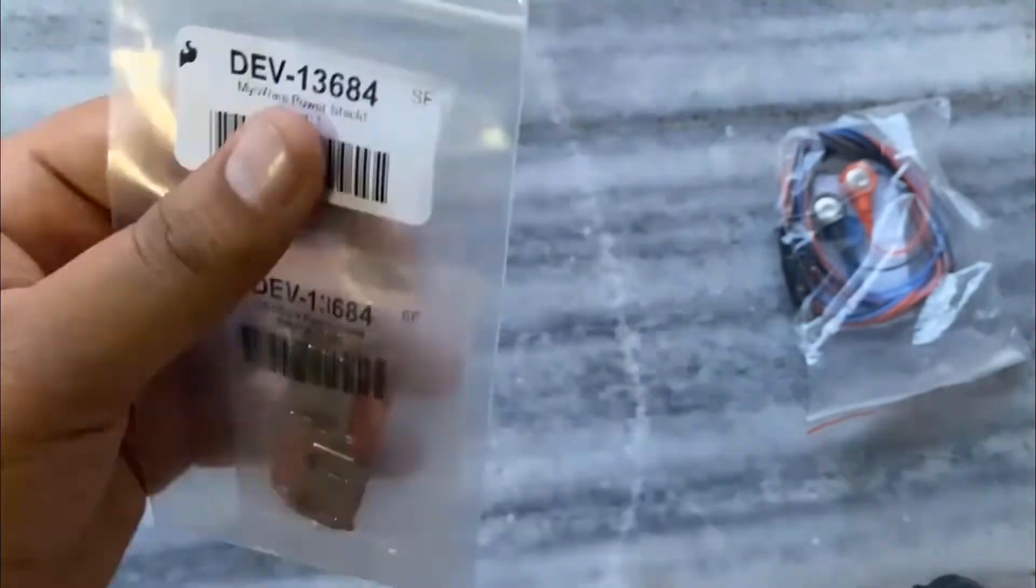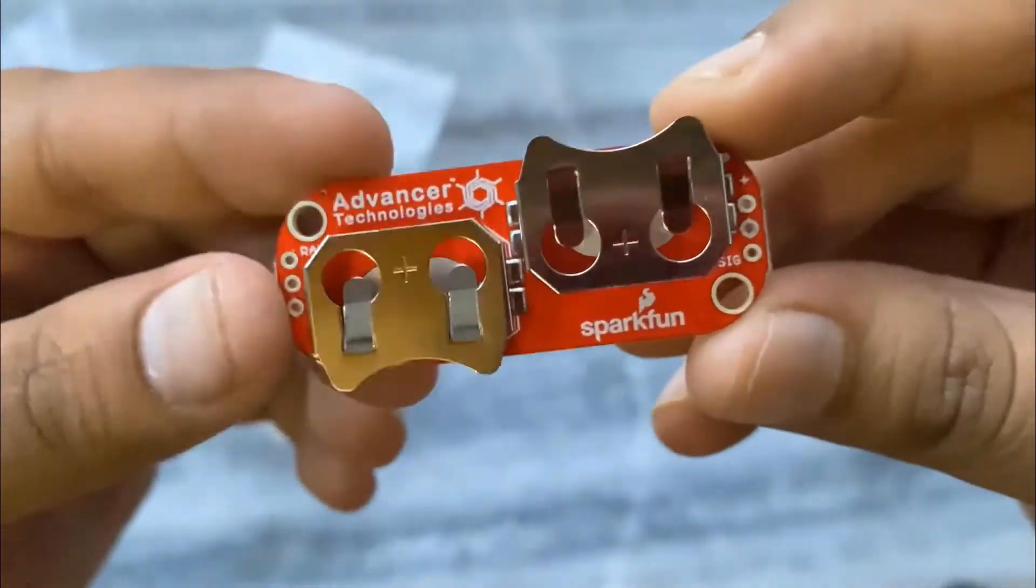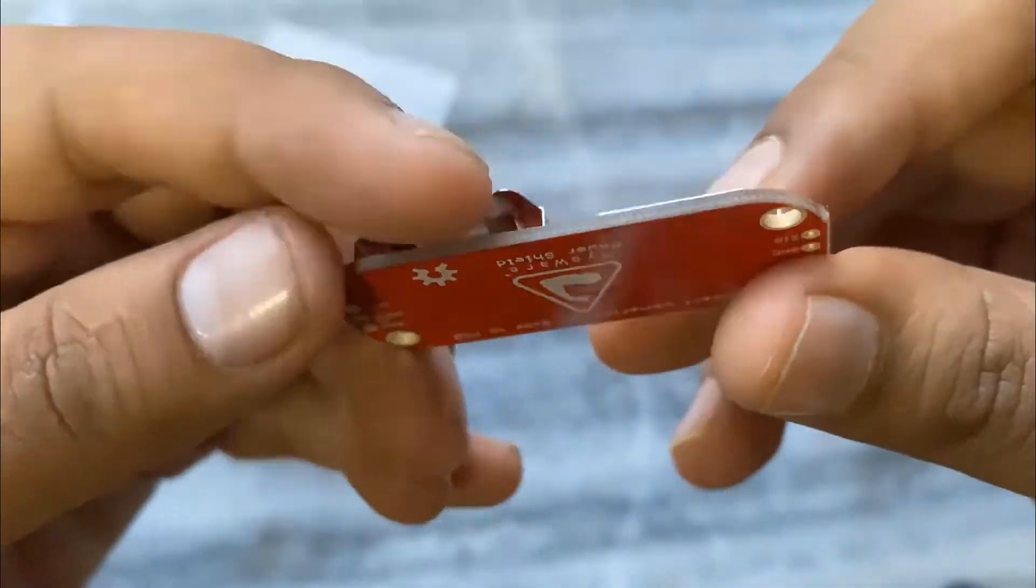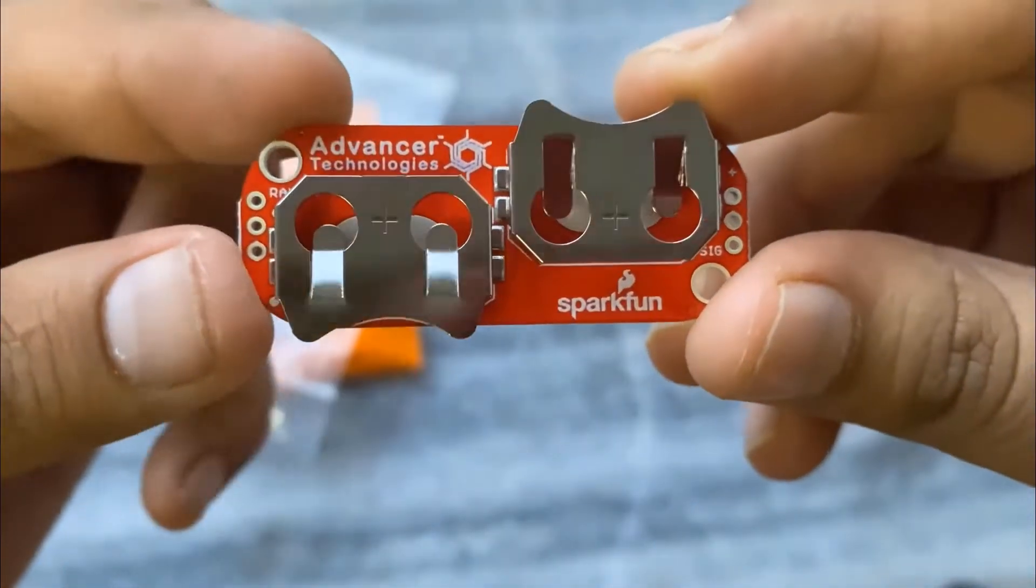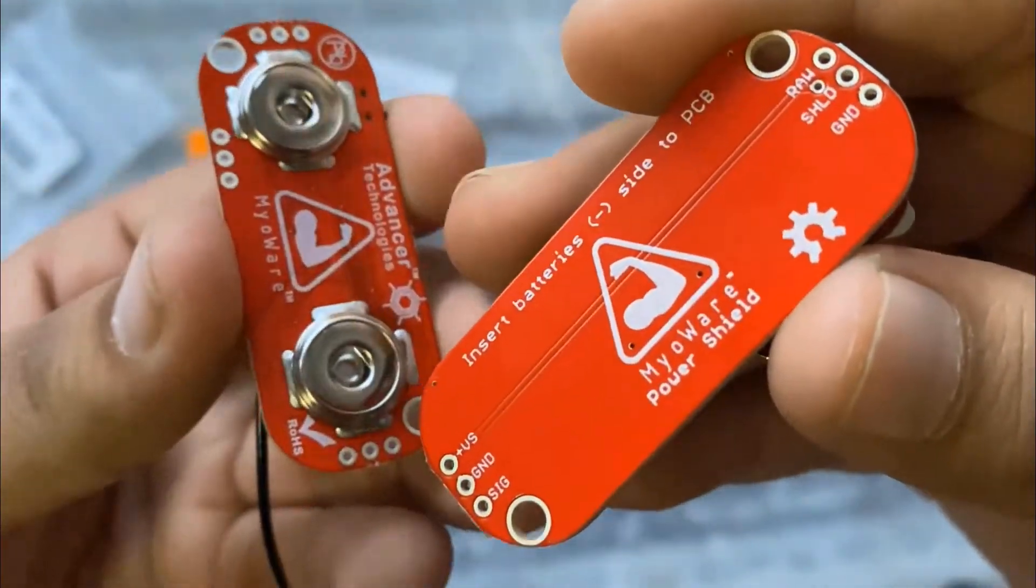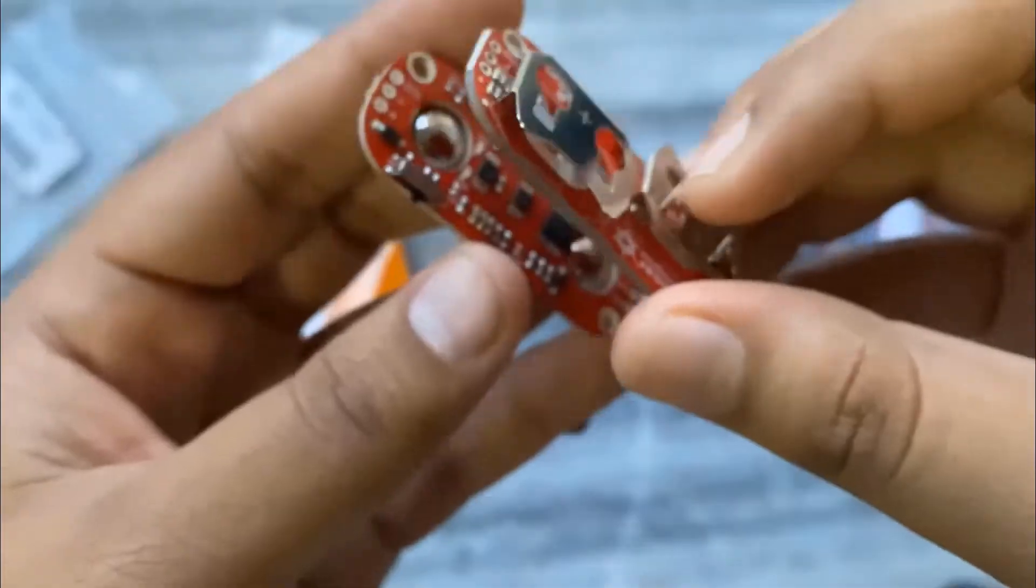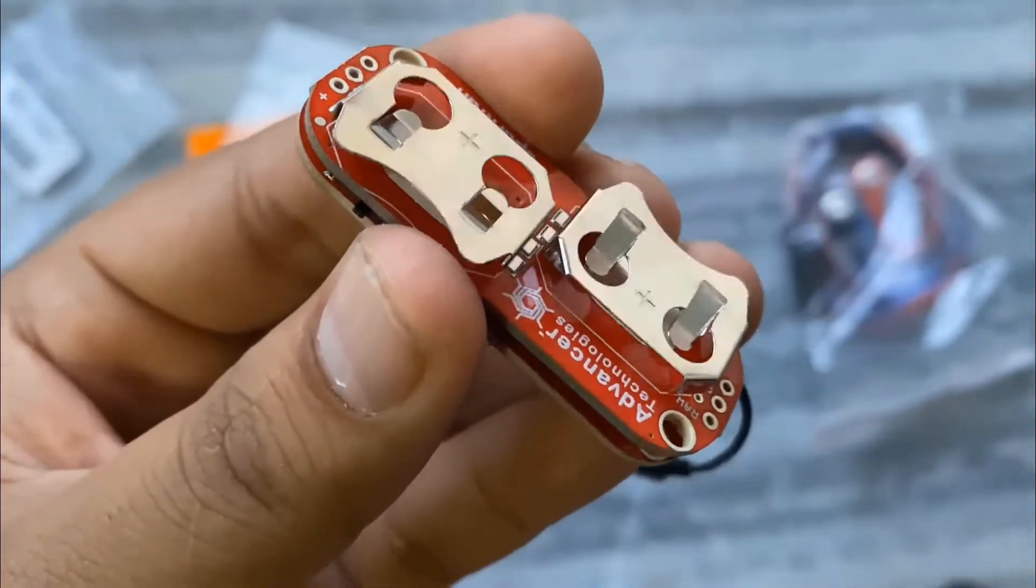Now let's see this packet again. This is a Myoware power shield. The Myoware power shield is designed to take two coin cell batteries, such as standard CR2032s. They are connected in parallel for extended capacity at a nominal 3.0V. This shield also fits directly to the Myoware muscle sensor.